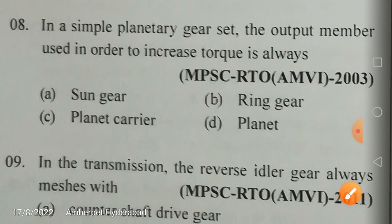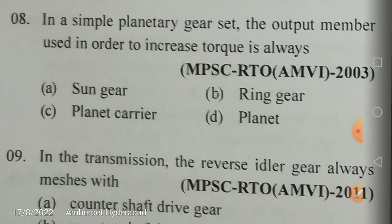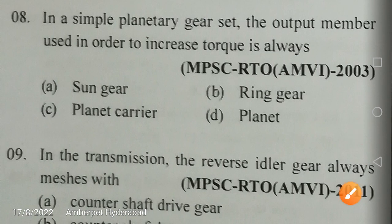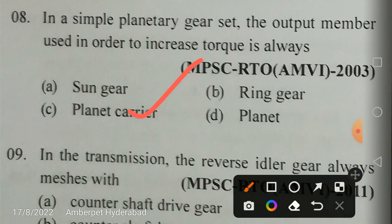In a simple planetary gear set, the output member used to increase torque is the planet carrier. There are three gears: ring gear, sun gear, and planet carrier. The planet carrier is used to increase torque, so planet carrier is the correct answer.